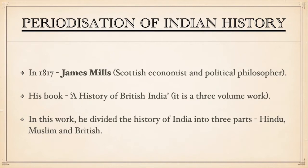In 1817, a Scottish economist and political philosopher James Mill published an enormous three-volume work namely 'A History of British India.' In this work, he divided the history of India into three parts: Hindu, Muslim, and British.